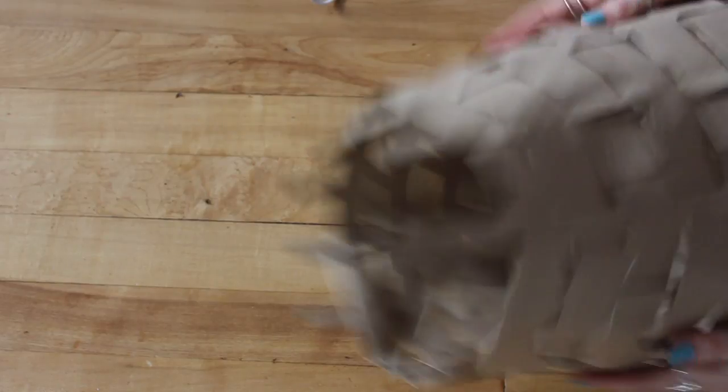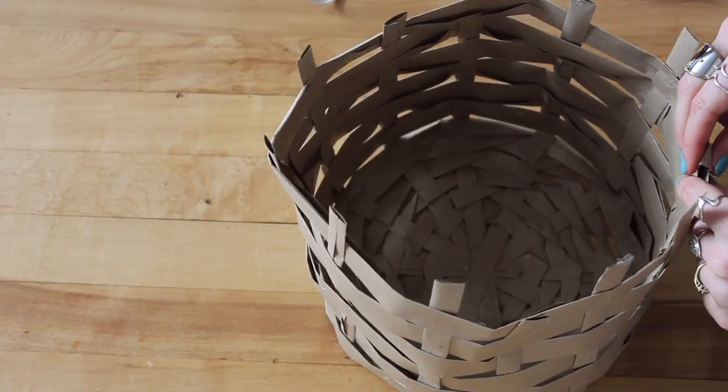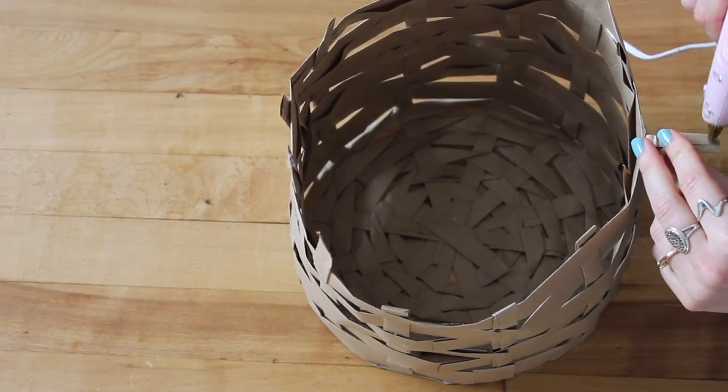And then once you get done, this is pretty much what your basket looks like. I took those extra ends that were still sticking up, folded them over slightly, and then just hot glued them into place.